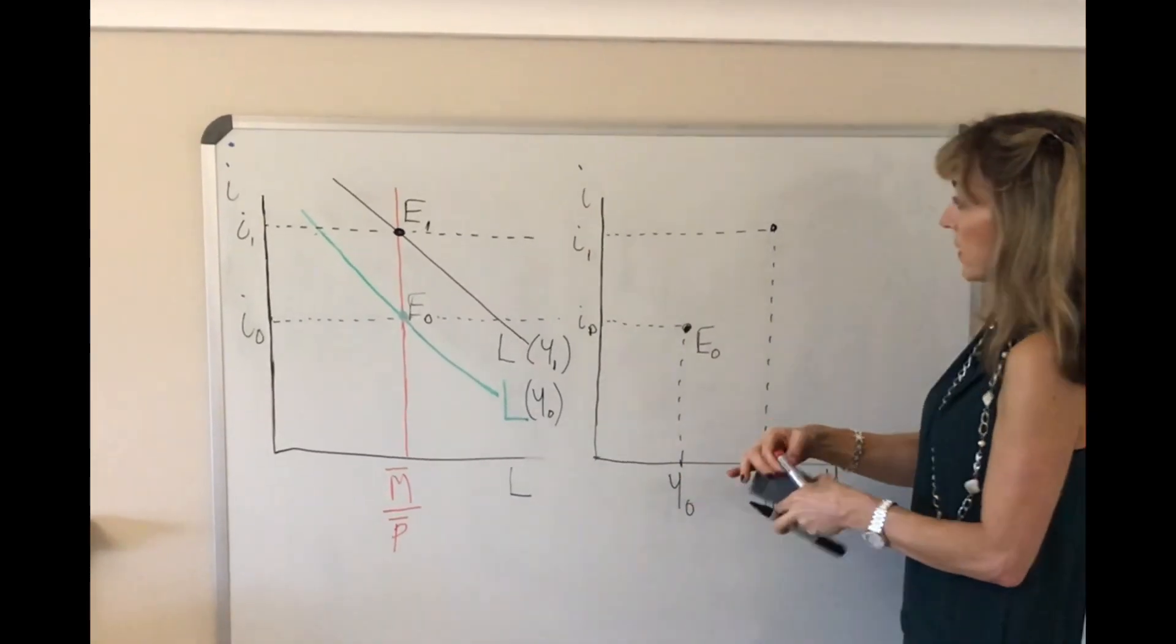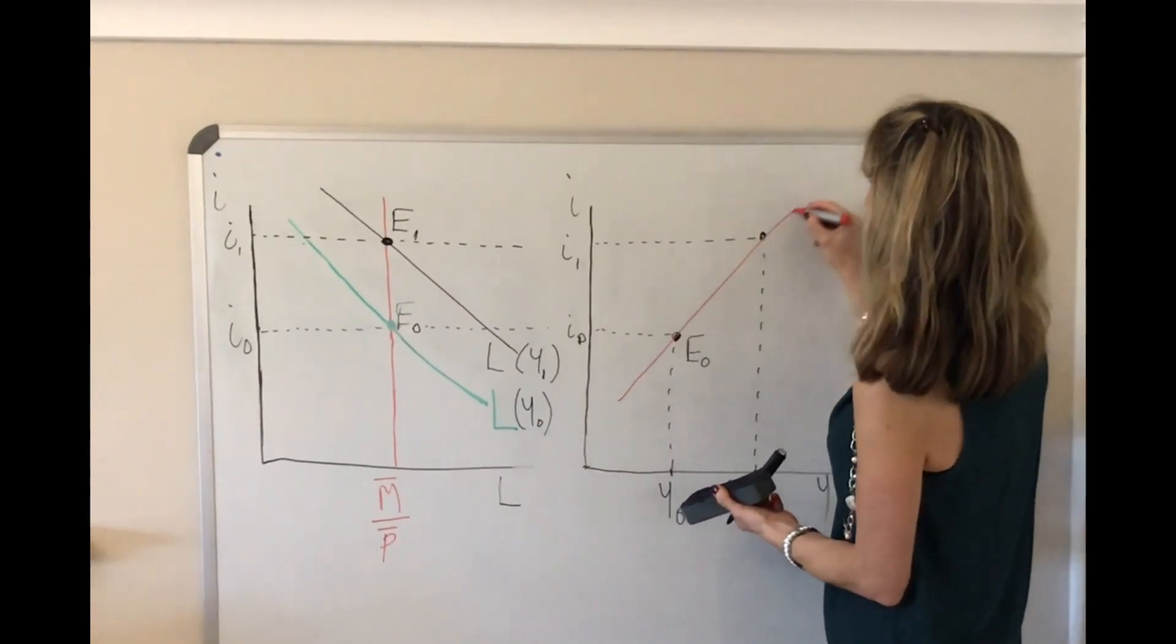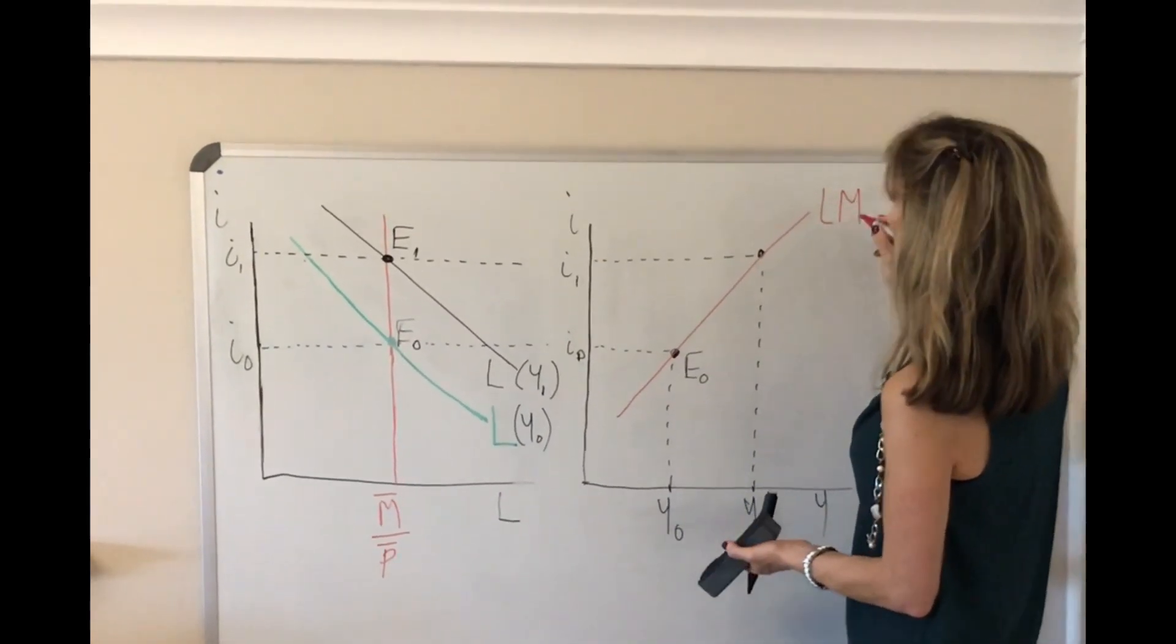So we've got two points and we can join those together and we get an upward sloping LM curve.